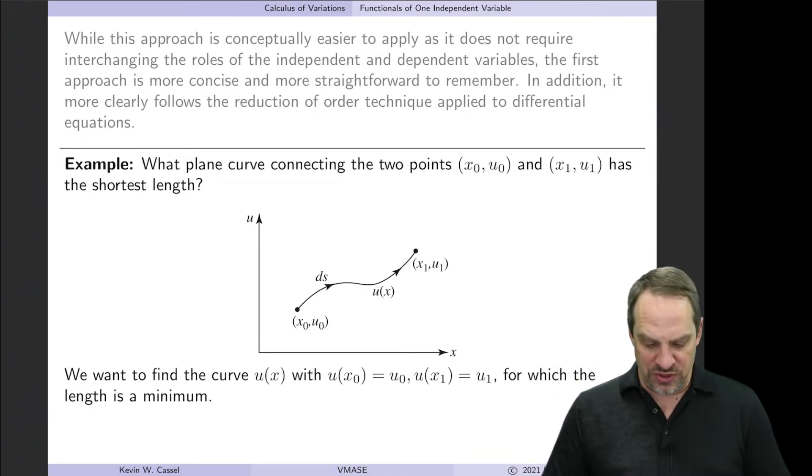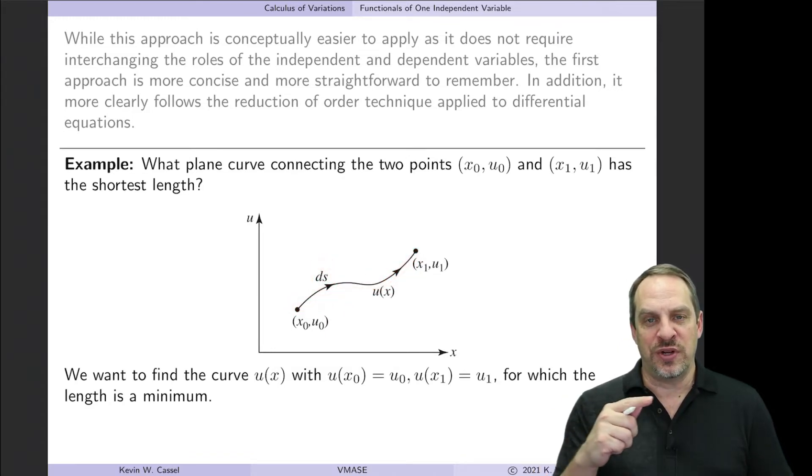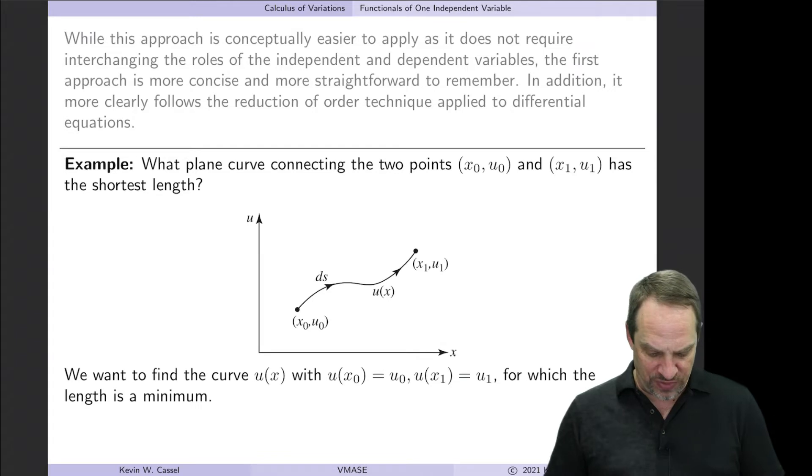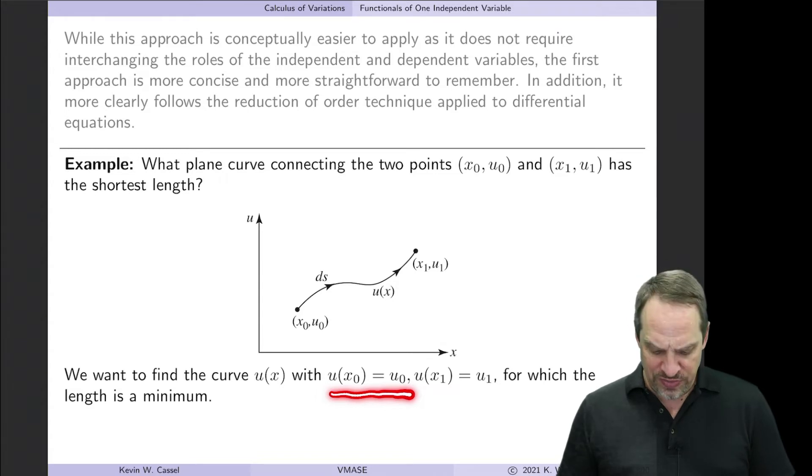Step one is to formulate our functional. We need to determine the length of this u(x), where ds, as usual, is a little differential element that goes along our function u(x). We know the end points. We know that at x equals x0, u is u0, and at x equals x1, u is u1.